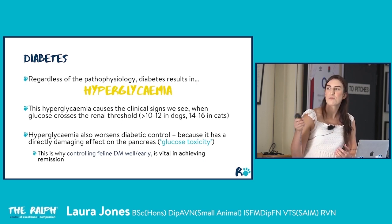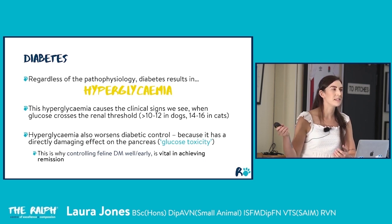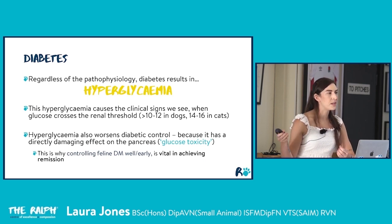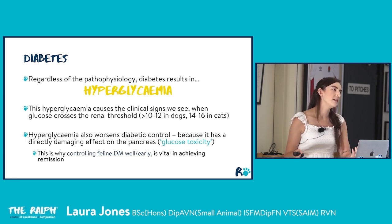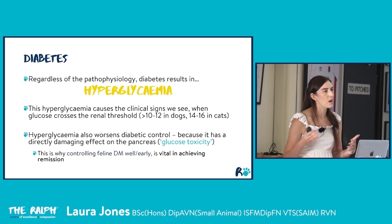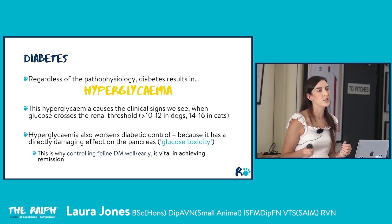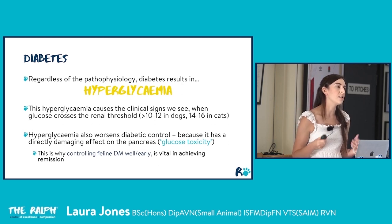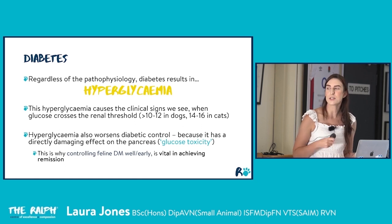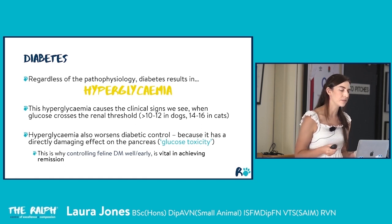In cats, this glucose toxicity is especially important: if enough pancreatic beta cells become permanently damaged, the cat will become permanently diabetic and we lose the window for remission. That's why getting cats well controlled early is a priority.